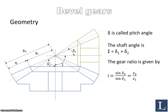Moving on to bevel gears and their geometry. Delta, the pitch angle of the gear, is shown here. The shaft angle — the angle between the two shafts where each gear is mounted — is basically the sum of the two pitch angles. The gear ratio can be calculated using the pitch angles as per this expression, or using the number of teeth: Z2 divided by Z1.